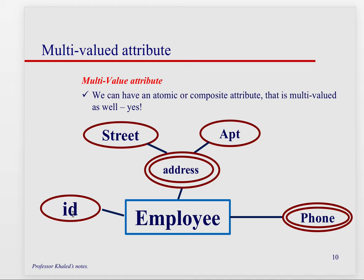Here's an example where the ID is our regular single, simple attribute, but then we have multi-valued attributes such as address and phone, where someone can have multiple addresses and multiple phone numbers. You can see it's depicted with the double oval, and it's broken down as well.